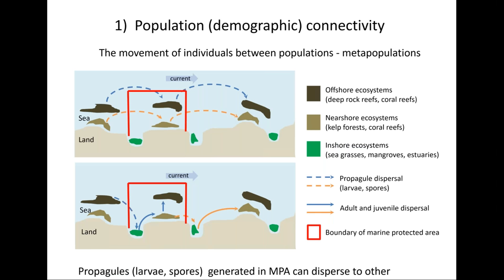Returning to the population connectivity illustration, I've superimposed a marine protected area on the central population across a species' range. Populations within a protected area will often generate young carried away to replenish populations outside. This implies that protecting an area can have consequences to populations outside those boundaries. But it also leaves those populations reliant on delivery of young from outside the protected area, meaning the state of populations outside has important implications for what you're trying to protect inside.